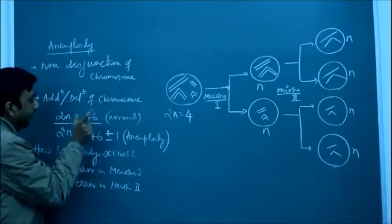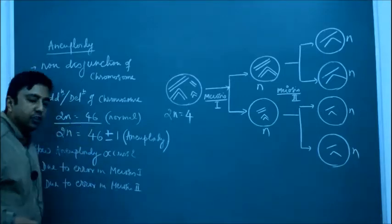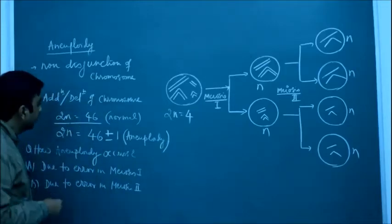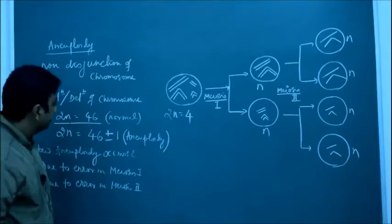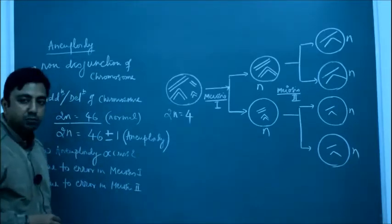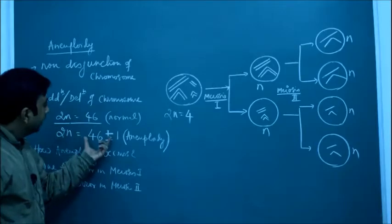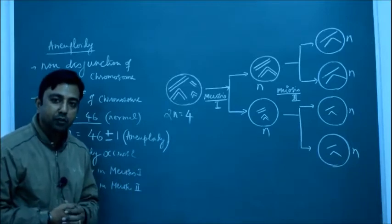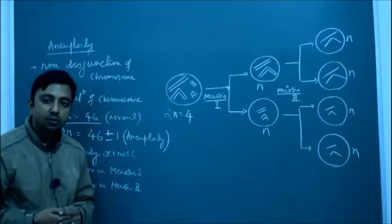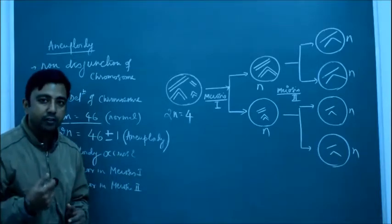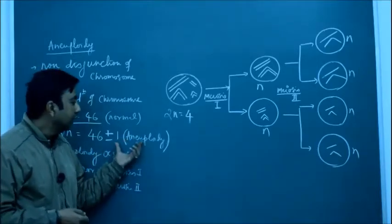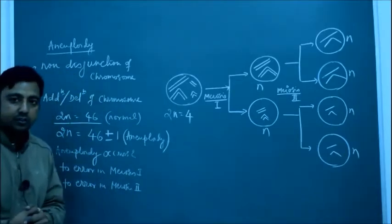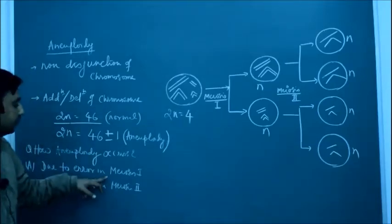To understand this, I have taken the example of a human being. In a normal human being, 2n is equal to 46 chromosomes. In aneuploidy, 2n equals 46 plus or minus 1 — meaning if there is an addition of one chromosome the total becomes 47, or if there is a deletion the total becomes 45. These two conditions lead to aneuploidy. Aneuploidy occurs due to an error in meiosis 1 or an error in meiosis 2.